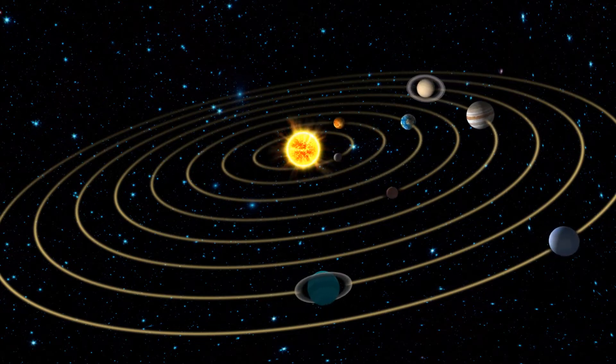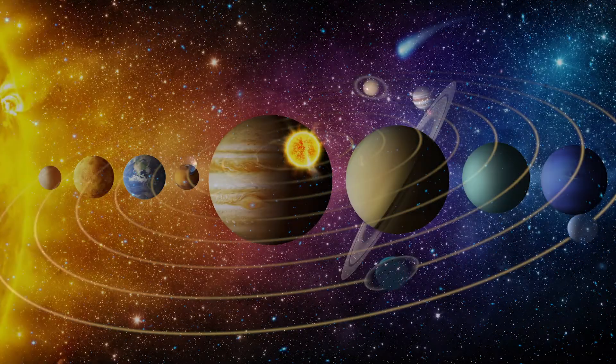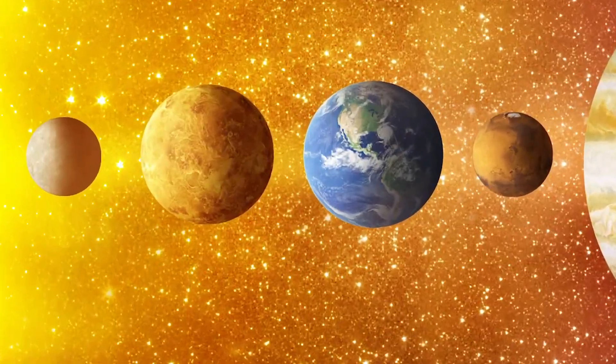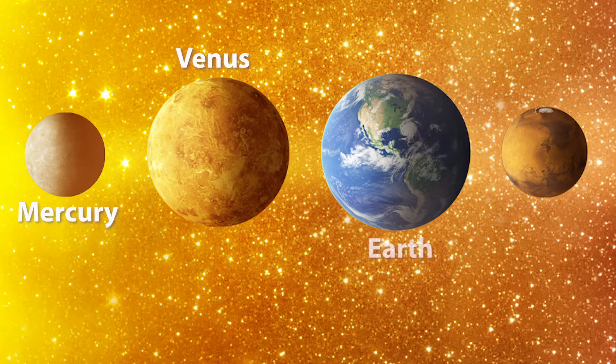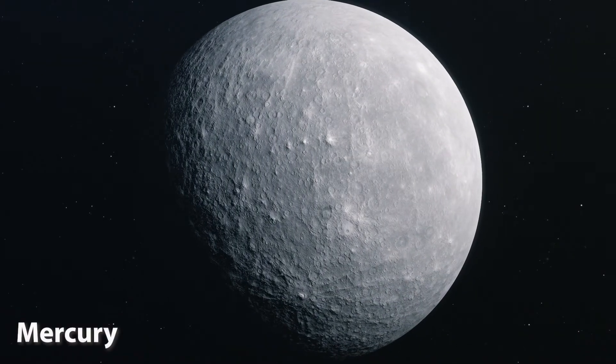The eight planets are the largest bodies orbiting the Sun. The four inner planets—Mercury, Venus, Earth, and Mars—are terrestrial planets. They are made up mostly of rock and metal.